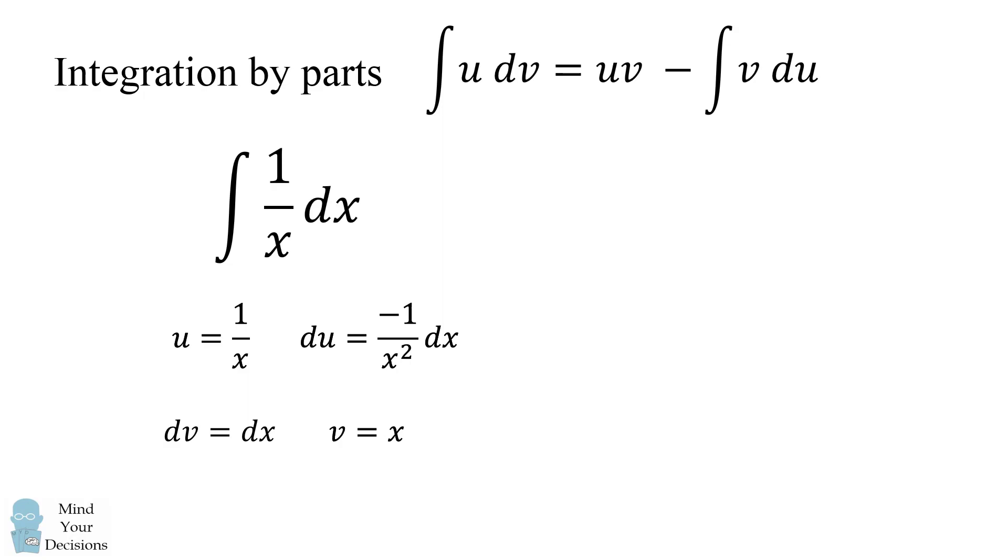We now use the integration by parts formula. We need u times v. This will be 1 over x times x. We then need to subtract out v du.